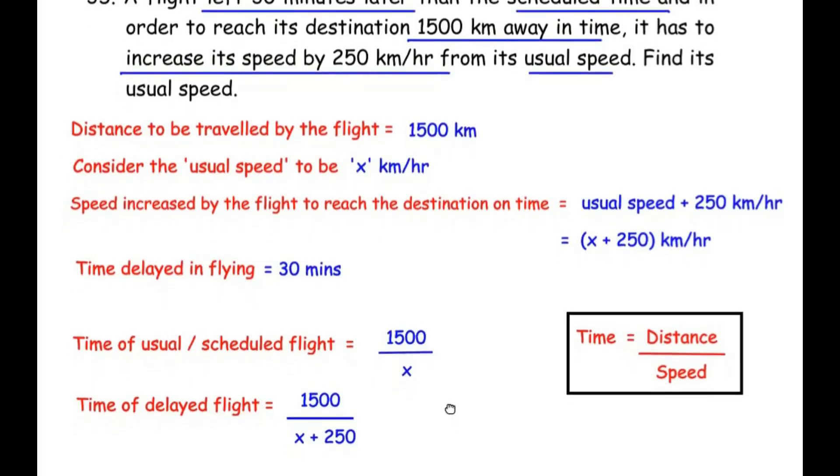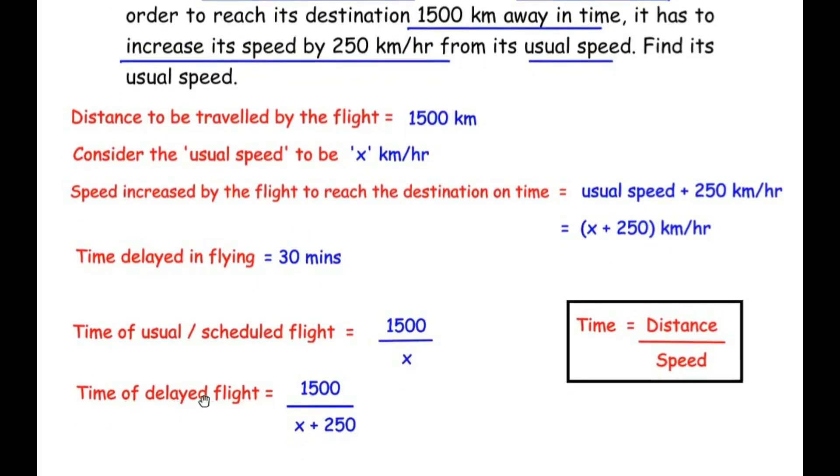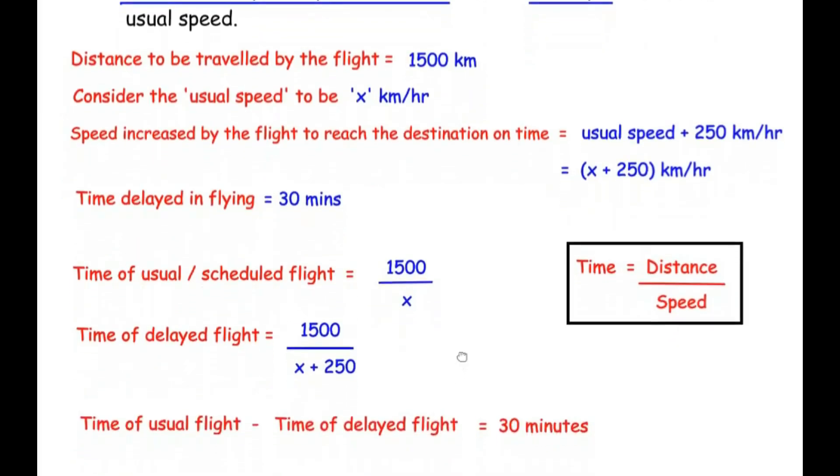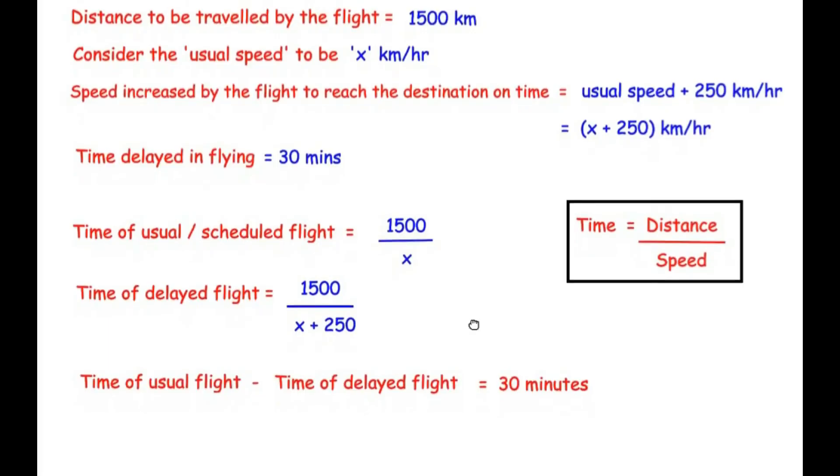Now let us look at the delayed flight. Now time of delayed flight is going to be, the distance is going to remain the same because the flight has to cover a distance of 1500 kilometers anyway, but the speed has been increased. So speed is x plus 250. Now let us try to frame an equation between the time differences of these two flights. Now the time differences between the scheduled flight and the delayed flight is given as time of usual flight minus the time of delayed flight. That is the time difference between these two circumstances is nothing but 30 minutes of difference.